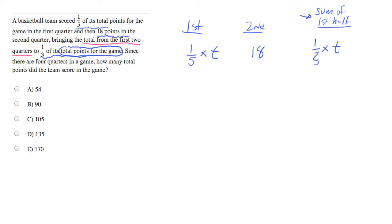Now they told us in the problem that the first quarter was one-fifth t and the second quarter was 18. So if I add those together, what I should get is the points from the first half, which is one-third t. Now we have an equation that we can solve for t, and t will give us total points the team scored during the game.